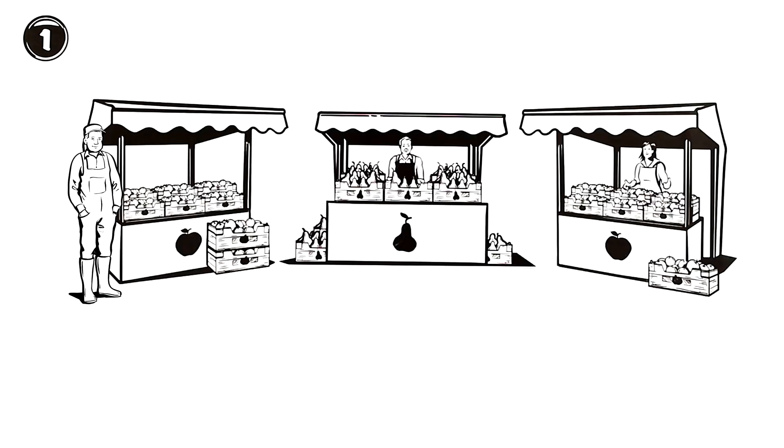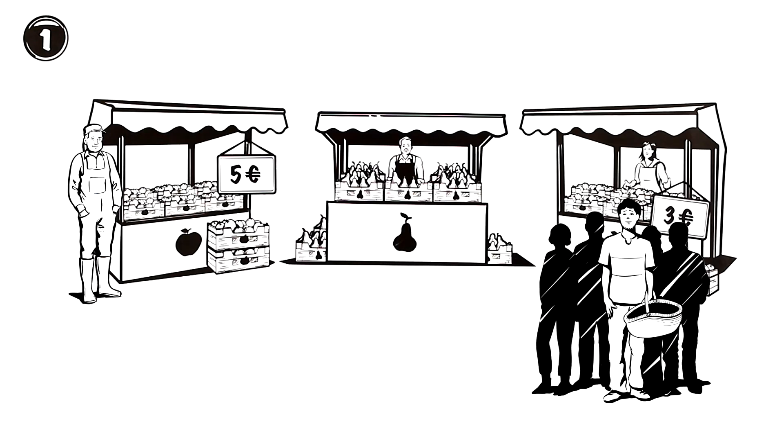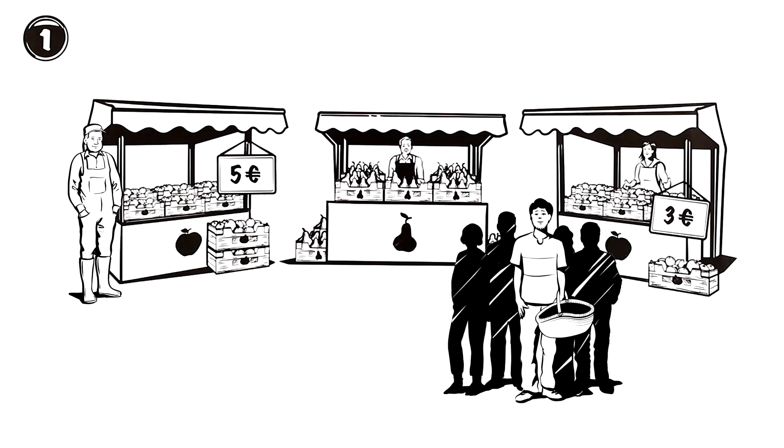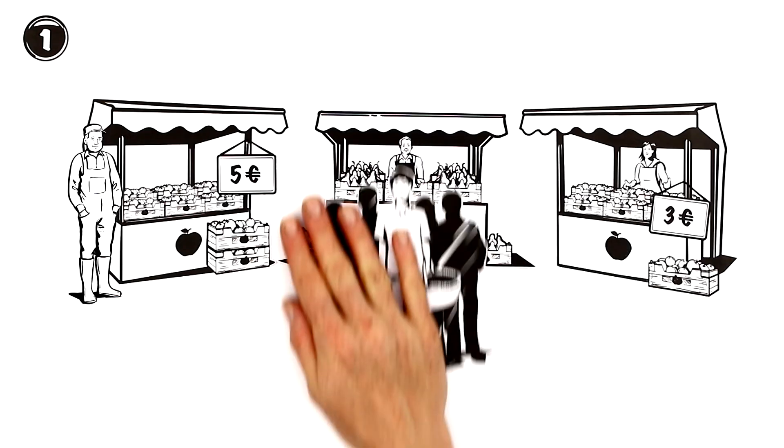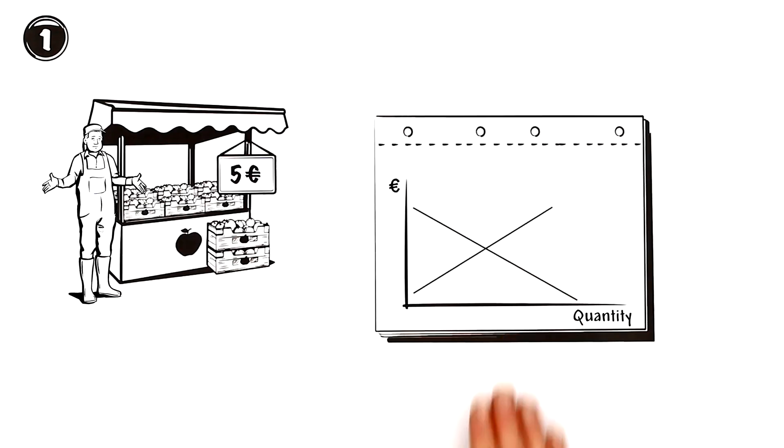Farmer Davies sells his apples for 5 euros per kilo which is higher than the prices being requested by other sellers. As a result, he soon loses customers to his competitors or the market goers choose to buy cheaper products like pears instead. Farmer Davies is therefore unable to sell his apples. The quantity supplied is greater than the quantity demanded which creates an oversupply.